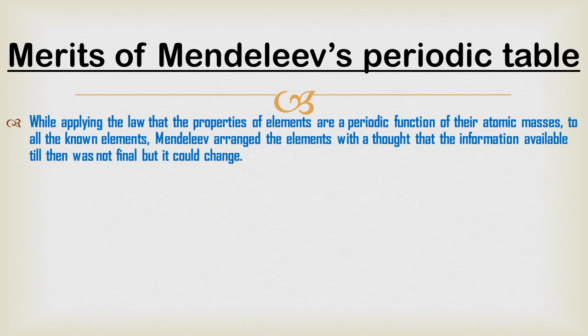Now let us study the merits of Mandeliev's periodic table. Science is always progressing and there is freedom to revise old inferences using more advanced means and methods. We have studied Newland's Law of Octaves and Dobereiner's Triads. Mandeliev's periodic table is a revised form of these two earlier theories of classification of elements. While applying the law that properties of elements are a periodic function of their atomic masses, Mandeliev arranged the elements with the understanding that information available till then was not final and could change.